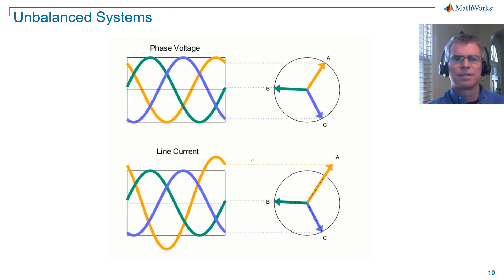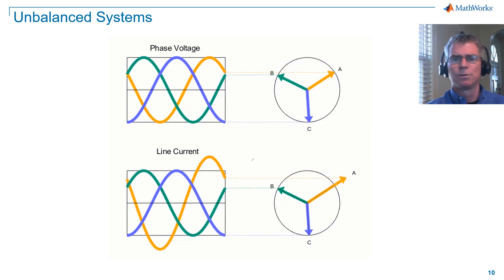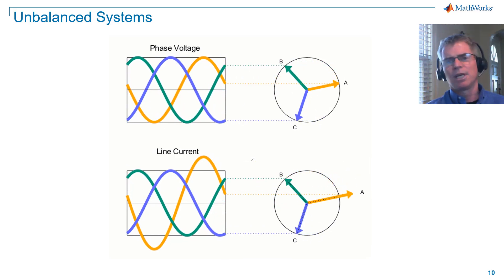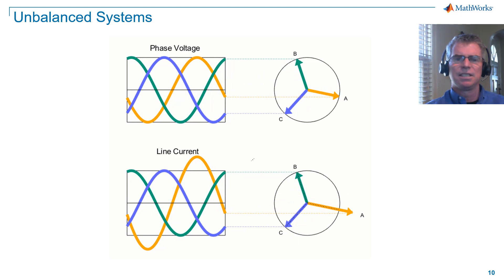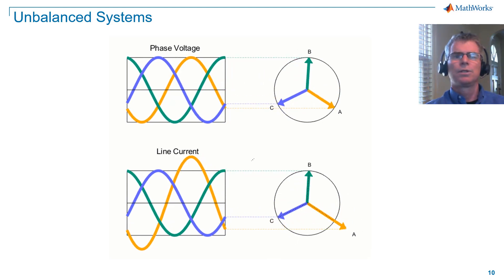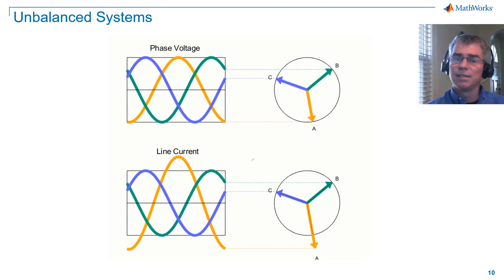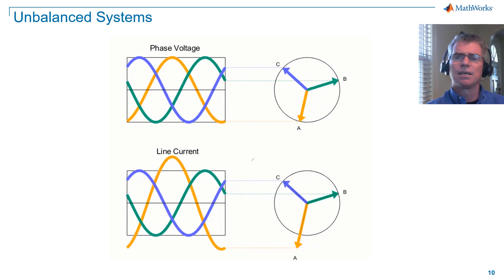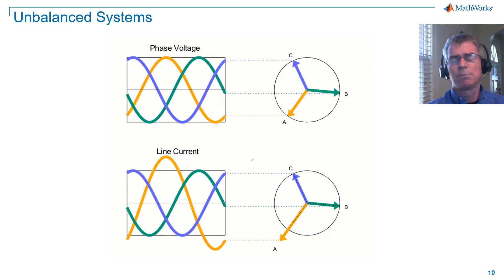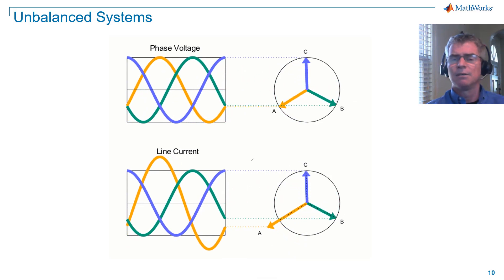We'll now cause an imbalance in our system by reducing the resistance on phase A by 30% relative to phase B and phase C resistances. Notice that while the voltage remains balanced, we've now caused an imbalance in current, with phase A current now being 30% larger in magnitude than phase B and phase C current.